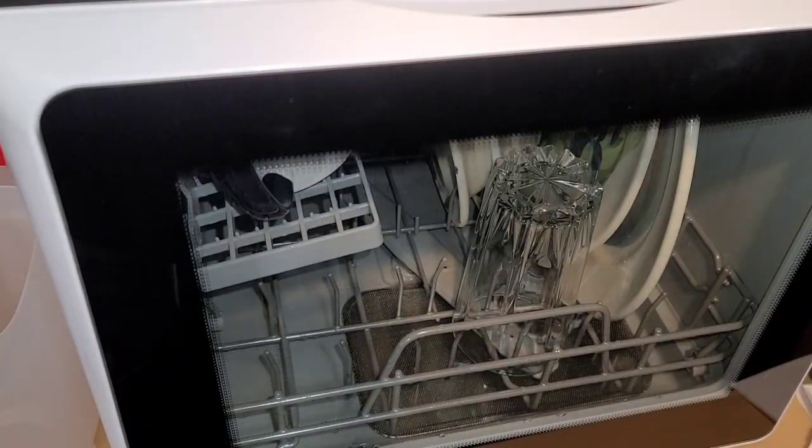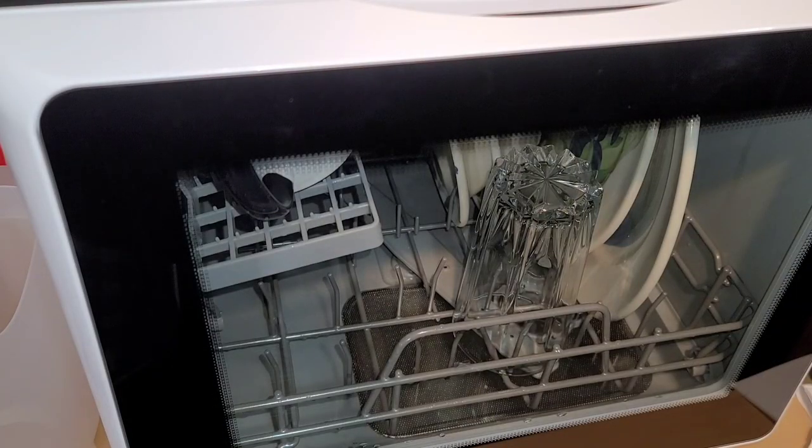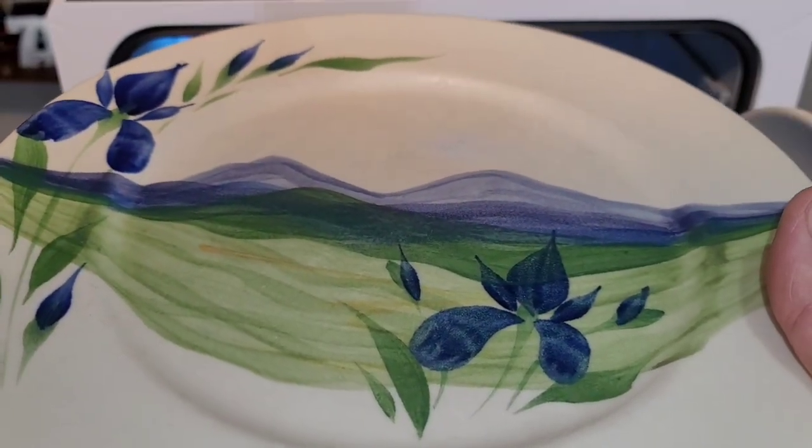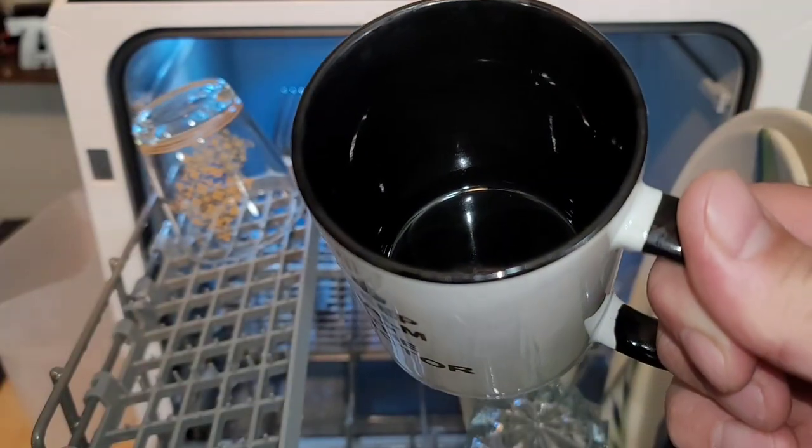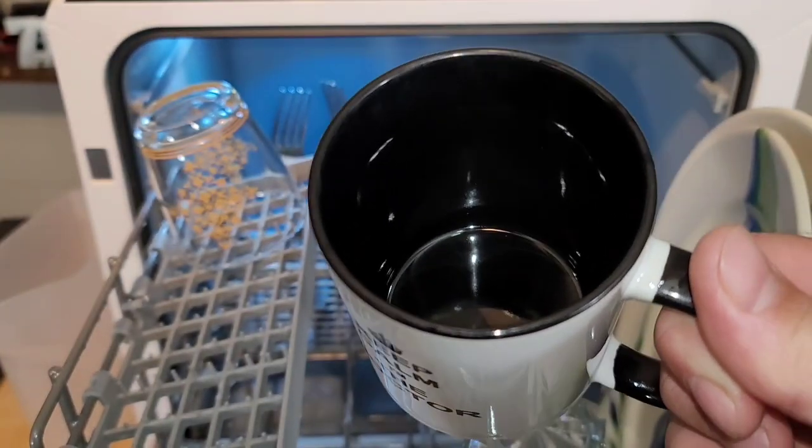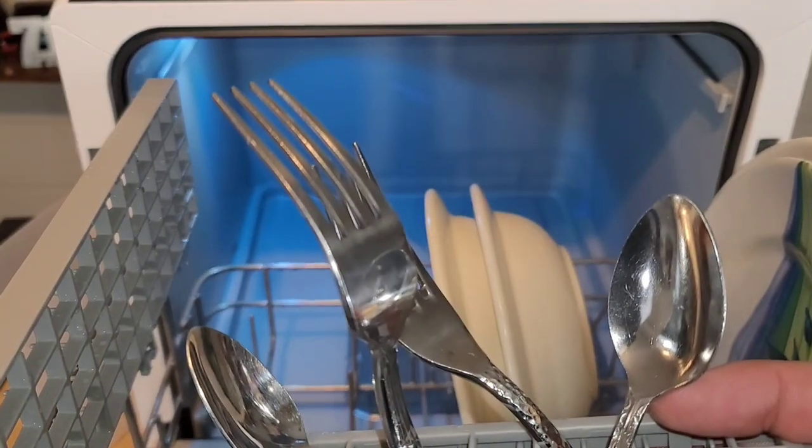We've now entered the drying cycle. What I'm going to do is open this up just to see how the dishes look. Pretty impressive. The plates look really, really clean. All the cinnamon is off of the mug. This cup looks clean. Let's check the silverware. Wow, everything is really, really clean.